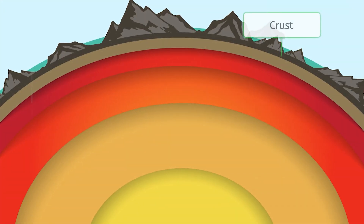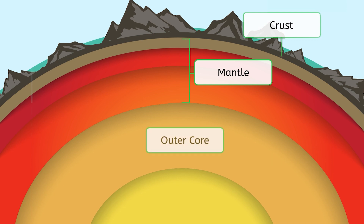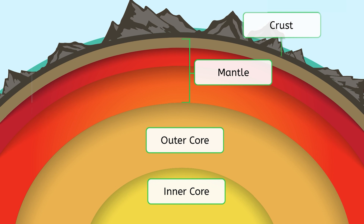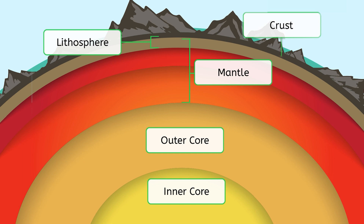Over the next few decades, as seismologists learned more, they were able to identify the main layers of the Earth as we know them today. Do you know what they are, geologists? There's the crust, or surface of the Earth; the mantle; the outer core; and the inner core. They also discovered distinct layers of the mantle, such as the lithosphere, which is attached to the crust, and the asthenosphere directly below it.